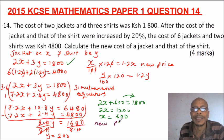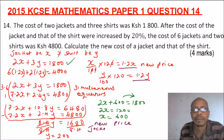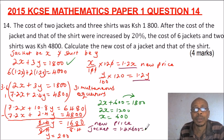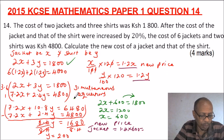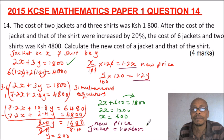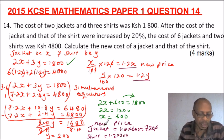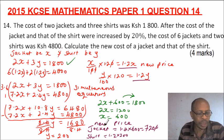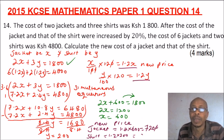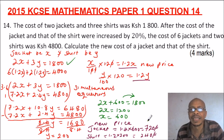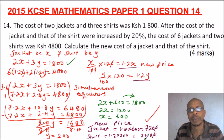These are the original prices. We need the new prices after the 20% increase. The new price of the jacket is 1.2 multiplied by x, which is 1.2 multiplied by 600, giving 720 Kenyan shillings. The new price of the shirt is 1.2 multiplied by 200, giving 240 Kenyan shillings.